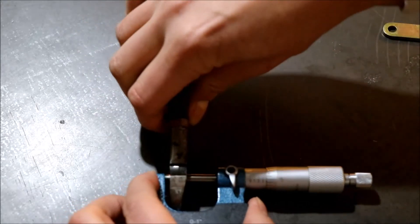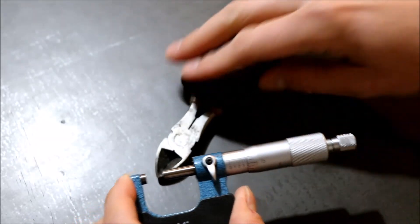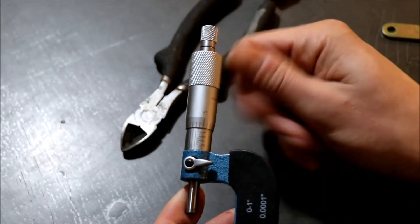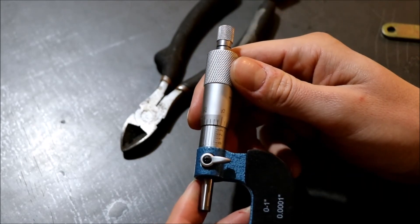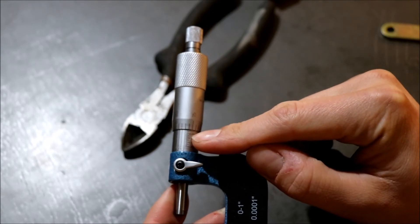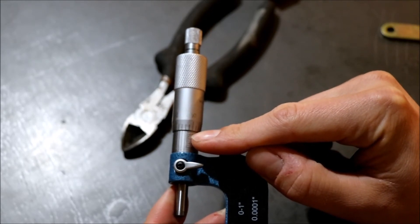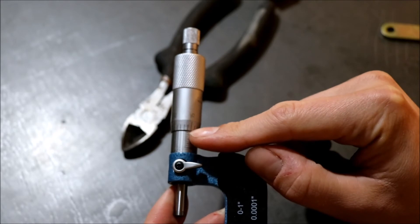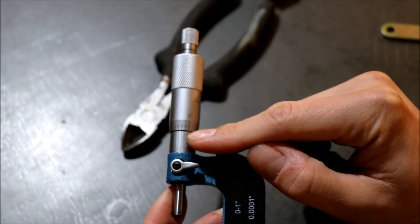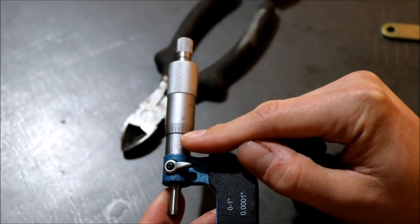And then we'll just repeat exactly what we just did. Except for now we're at a much larger number. So looking at this we are past the three hundred thousandths mark. And then we are just past the third notch after that. So we're at three hundred and seventy five thousandths of an inch.